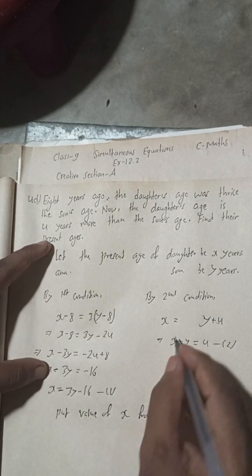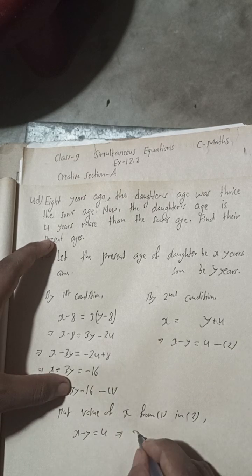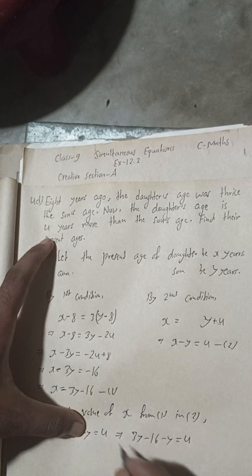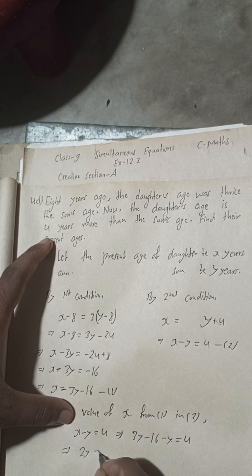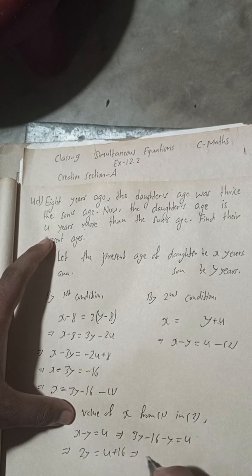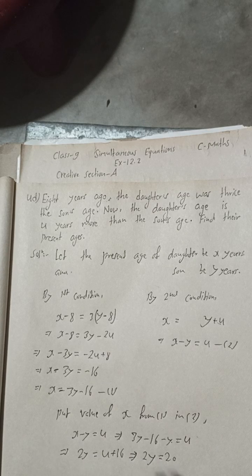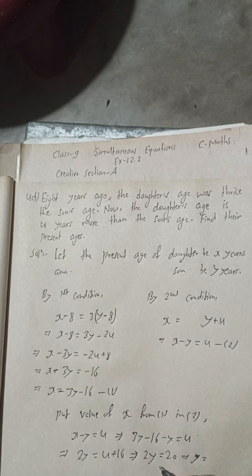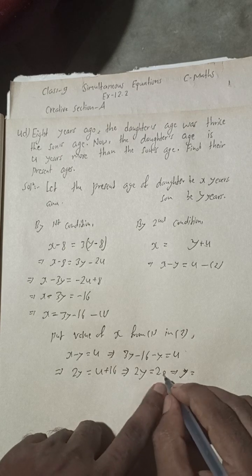Now put the value of x from equation 1 into equation 2. So x minus y equals 4 becomes: 3y minus 16 minus y equals 4. This simplifies to 2y minus 16 equals 4, so 2y equals 4 plus 16, giving 2y equals 20.